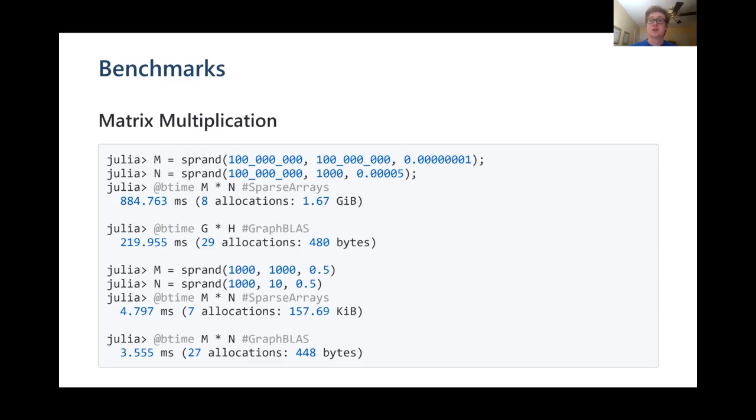Before discussing the benchmarks, note that there is an overhead to creating a GB matrix from a sparse matrix CSC. GraphBLAS native sparse rand should help alleviate many of these cases, but just keep that in mind.